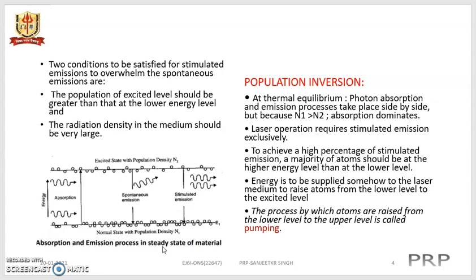This absorption and emission process in steady state of material is depicted in the diagram. Now, let us see what population inversion is taking place inside the lasing action. At thermal equilibrium, photon absorption and emission processes take place side by side, but because N1 is greater than N2 in population density, absorption is dominating at this stage where N1 is greater than N2. Laser operation requires stimulated emission exclusively; to achieve this, a majority of atoms must be at the higher energy level.